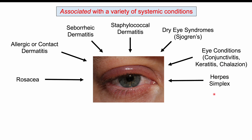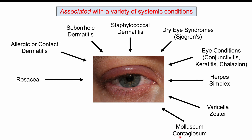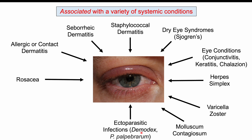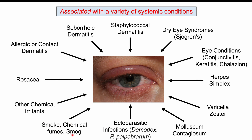Herpes simplex virus infections causing herpes simplex dermatitis, varicella zoster virus infections causing varicella zoster dermatitis, and molluscum contagiosum — a viral infection — are also associated. Ectoparasitic infections including demodex infections can cause blepharitis; demodex are microscopic hair follicle mites that get in and around eyelashes causing inflammation. Phthiriasis palpebrarum, smoke, chemical fumes, smog, and other chemical irritants can also lead to blepharitis.